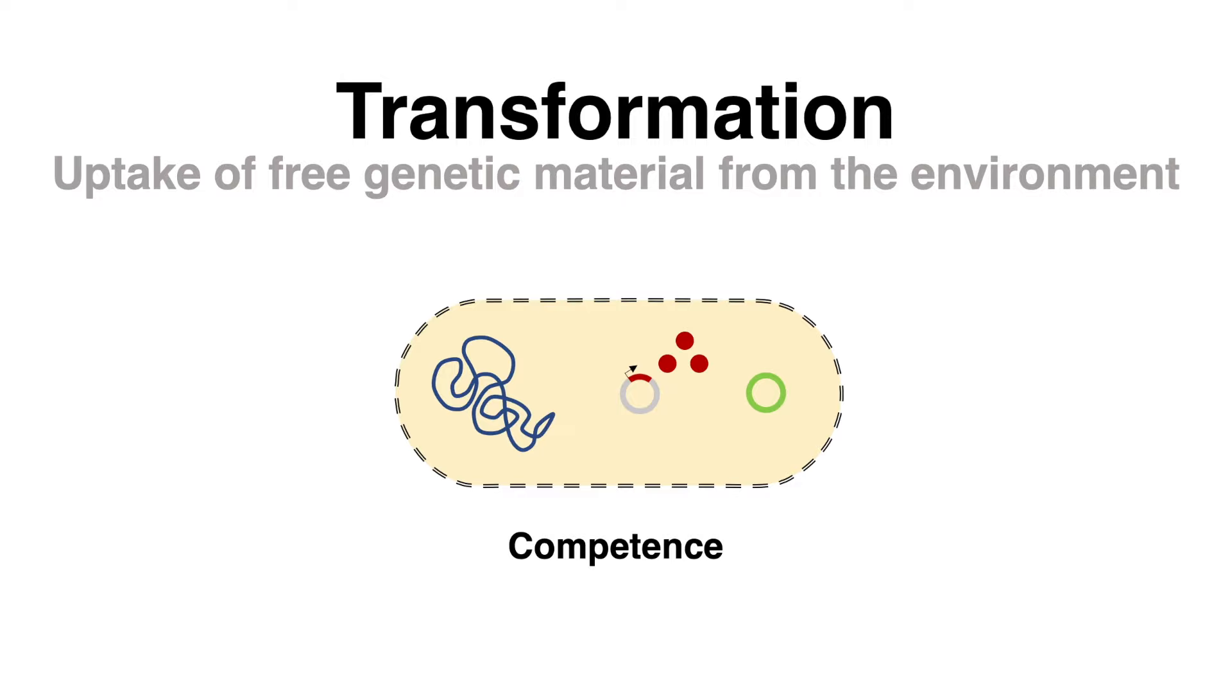Therefore, competence can also be induced by chemical modifications in the lab. To transform the bacterial cell with plasmid DNA containing the gene sequence of interest, the cell must acquire competence.